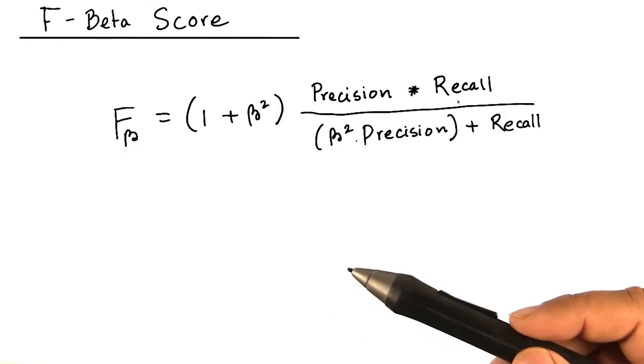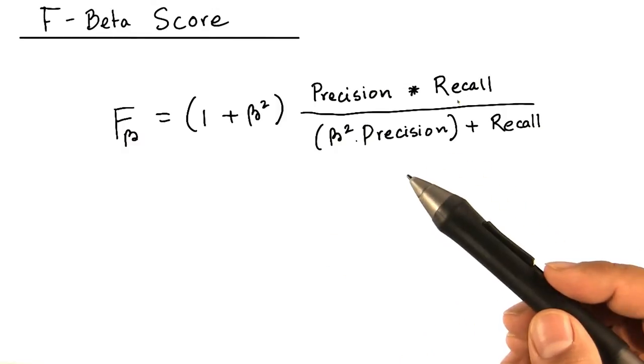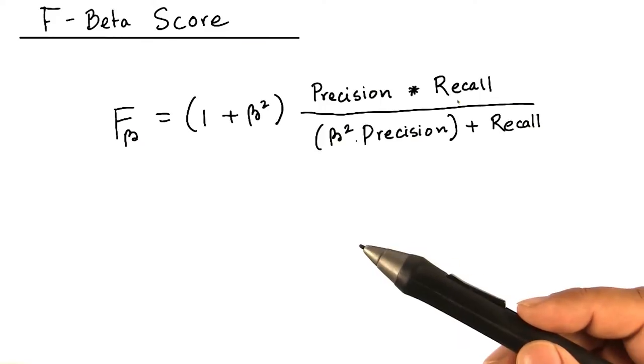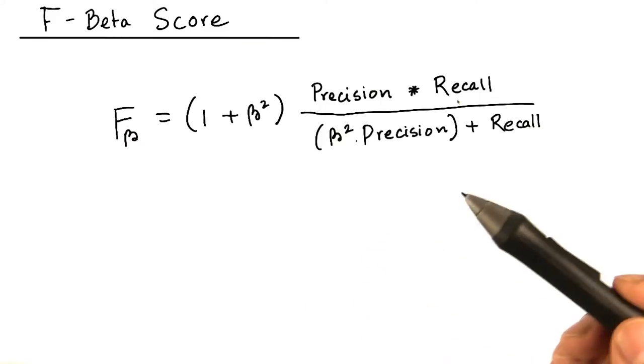One method would be to choose the model with the higher area under the ROC curve. Another method would be to choose the model with the higher F beta score.